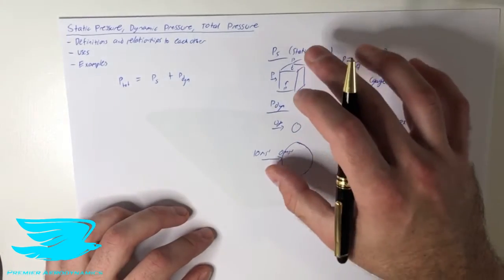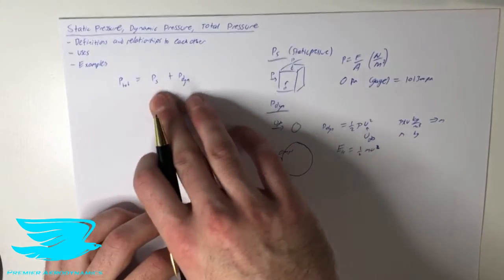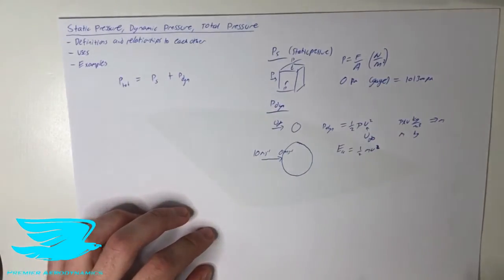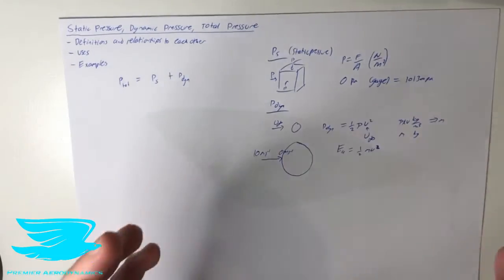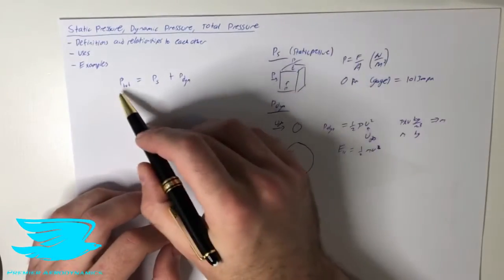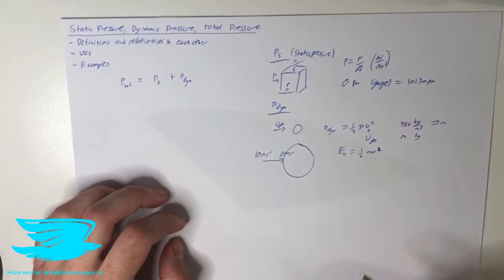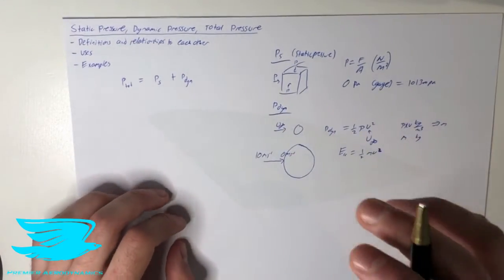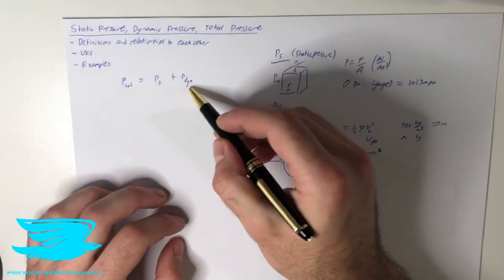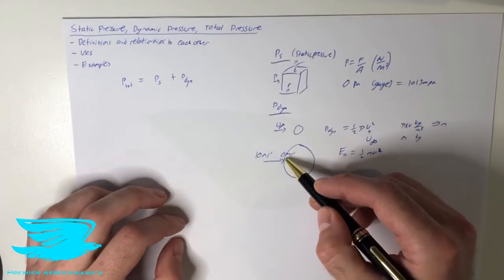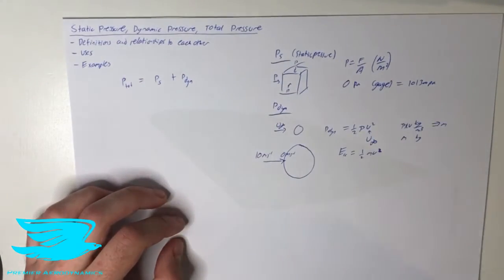Understanding static pressure and dynamic pressure, we can now calculate total pressure — it's the combination of these two together. If there is no relative motion between an object and the flow, the pressure felt will just be the static pressure. But if we have some relative motion, we'll start to feel an additional pressure from the dynamic term, and the pressure that occurs will be the total pressure.